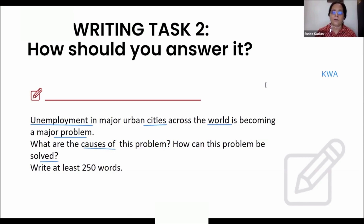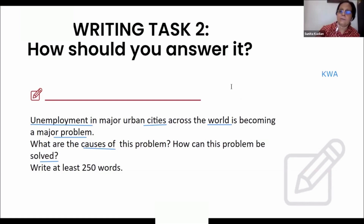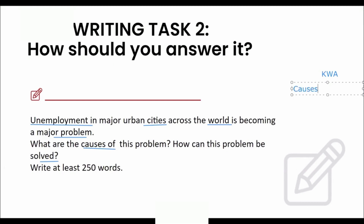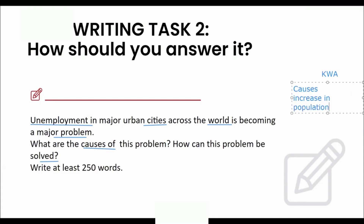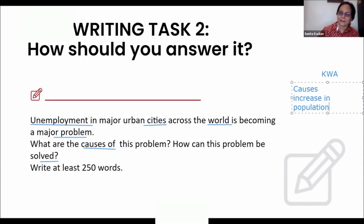According to these keywords, we start generating content. The problem is unemployment in urban cities — New York, London, Paris, Montreal, Sydney. Why is there unemployment in such cities? Maybe the increase in population. Why is population increasing in such big cities? Because people are migrating to these cities — there's a lot of migration happening.